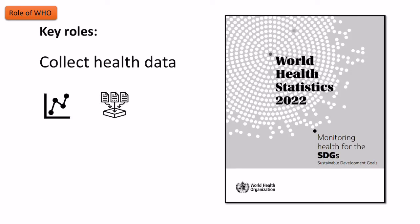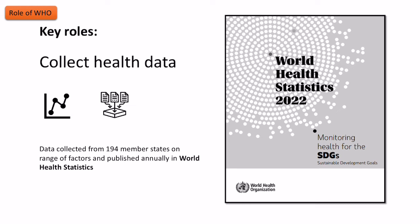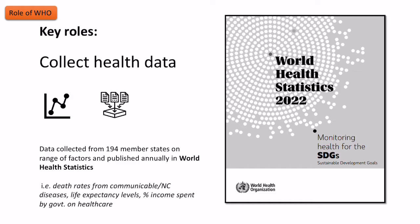WHO also collects a lot of health data. The 194 member states provide information and data, which WHO publishes in an annual report called the World Health Statistics. This can cover death rates from certain types of diseases, life expectancy levels, how much governments spend on healthcare, and whether countries are trying to meet the universal indicators set by other parts of the UN — for example, the Sustainable Development Goals.